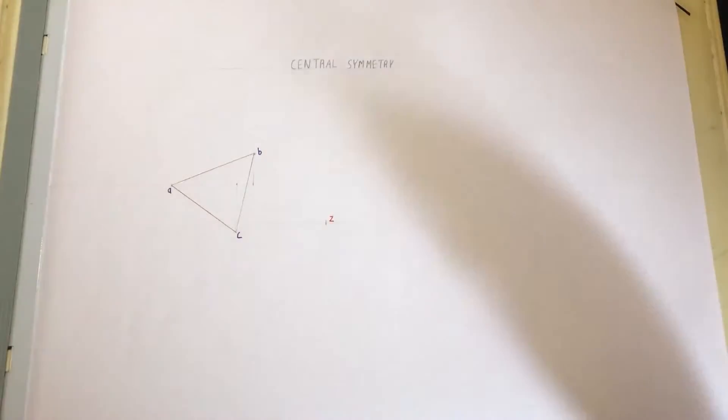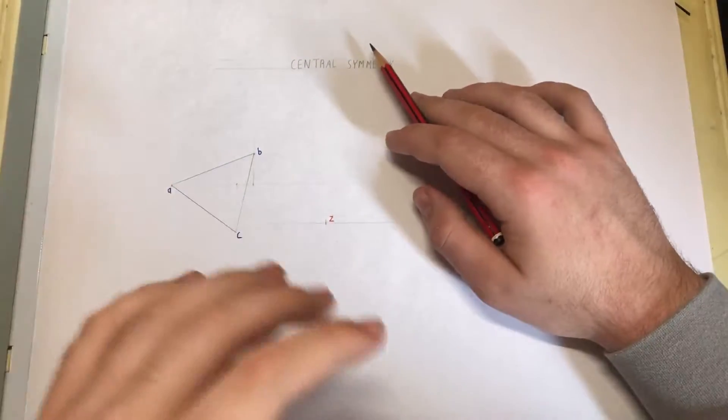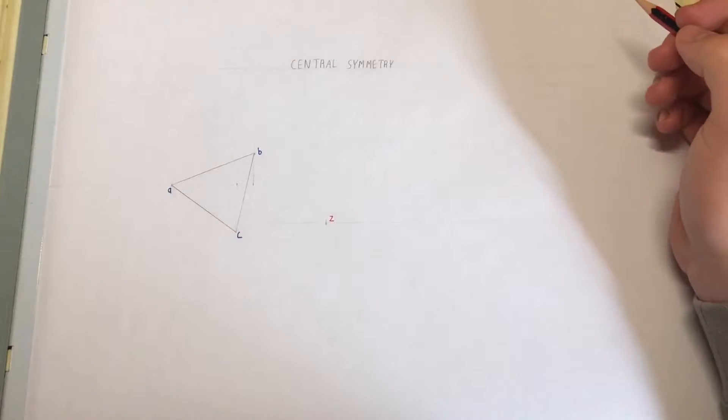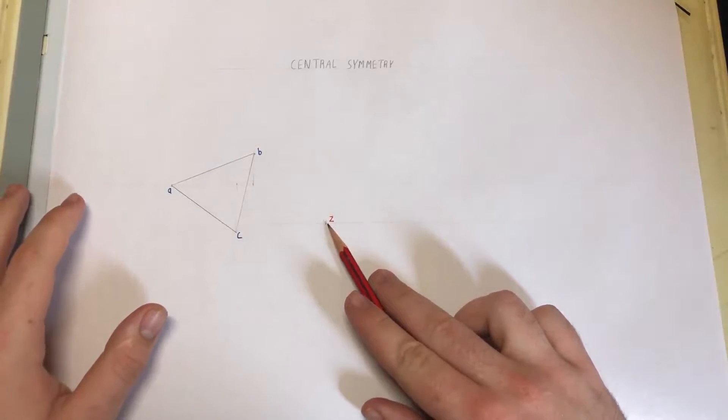Today we are looking at Central Symmetry, which is the image of a plane figure about a point. Our point today is point C.